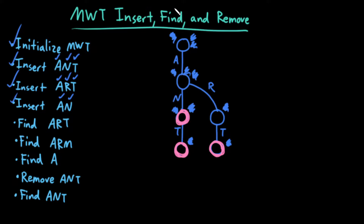So hopefully you're comfortable with the insertion algorithm. What about the find algorithm? The find algorithm is even easier. Start at the root, start at the first letter. For each letter in my word, check: does my current node have a child edge labeled by that letter? If it does, traverse it. If it doesn't, I failed — that word does not exist in my tree. Once I finish every single letter in my word, if the current node I'm at happens to be a word node, return true. Otherwise, return false. It's much easier if we just try it.